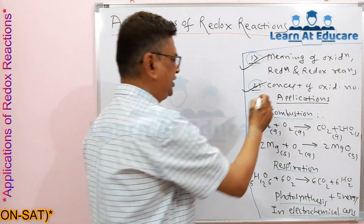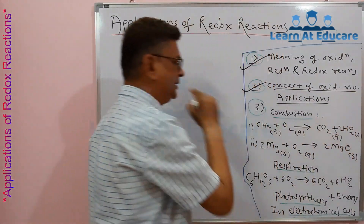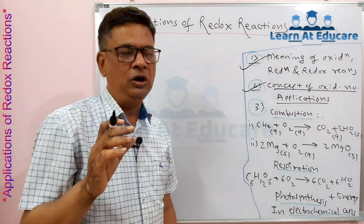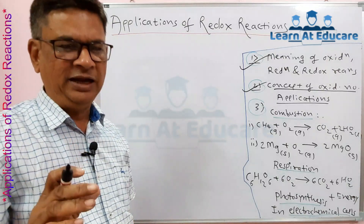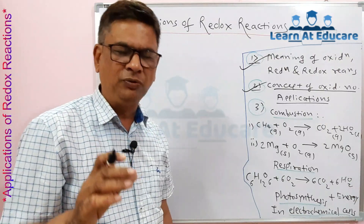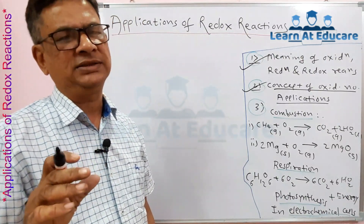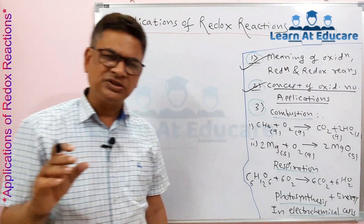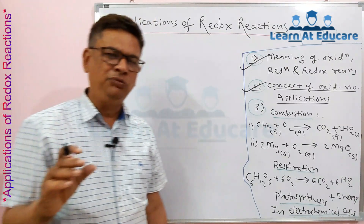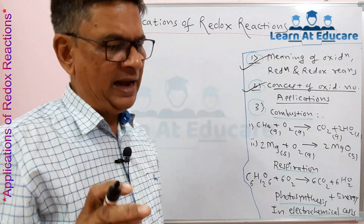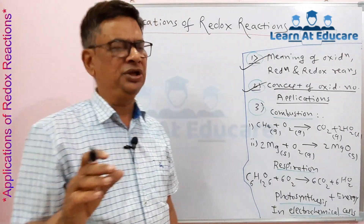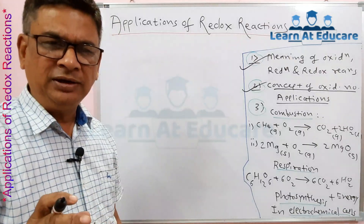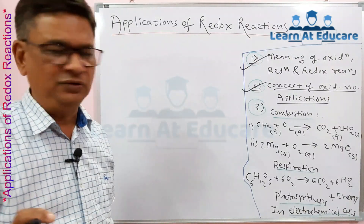The oxidation number concept refers to the numerical charge on an atom of an element present in a compound or ion — that is called its oxidation number. We have also seen the various rules about how to find oxidation number and the importance of oxidation number.